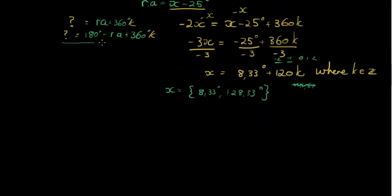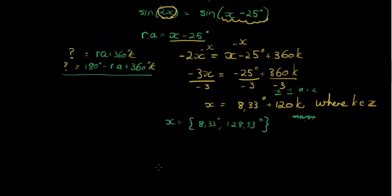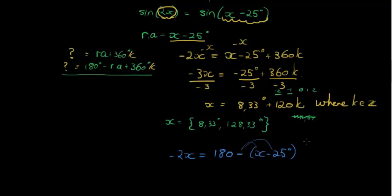The next part is where we take our other angle, which was negative 2x. We take negative 2x, and we make it equal to 180 minus our reference angle. This was my reference angle. So put it in brackets because otherwise you're going to forget to multiply in the negative. Plus 360 times k.